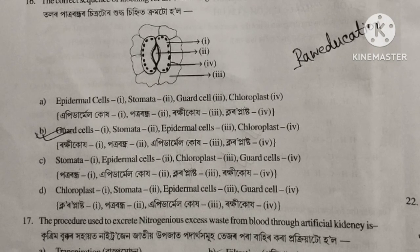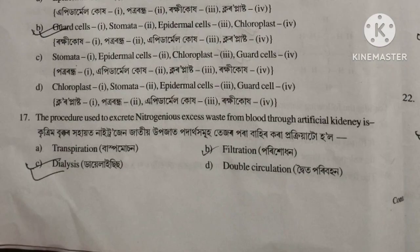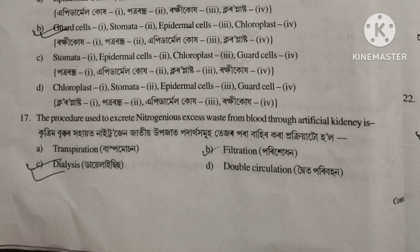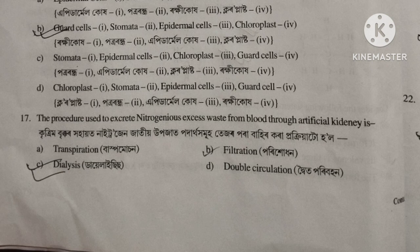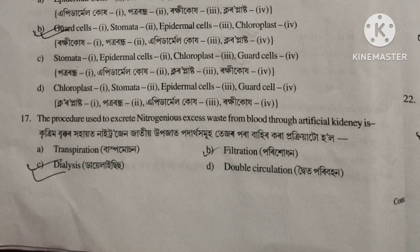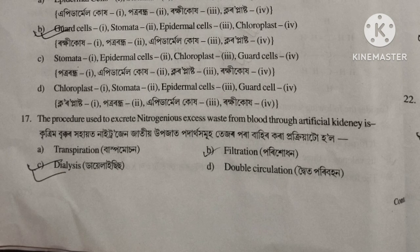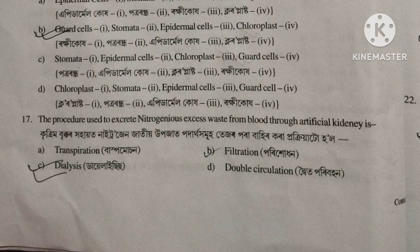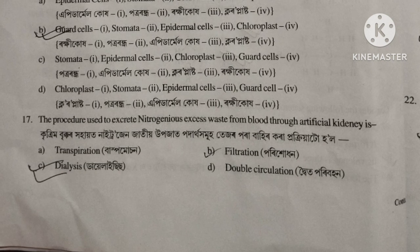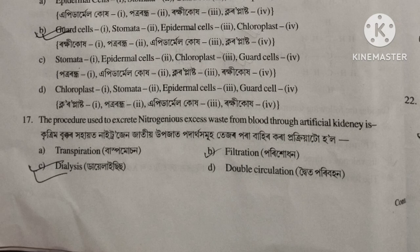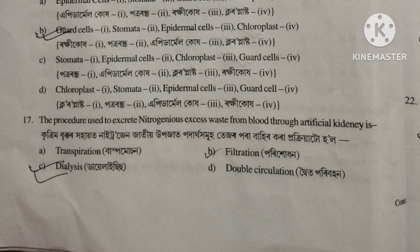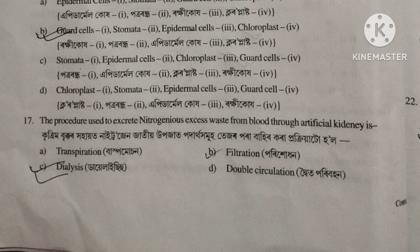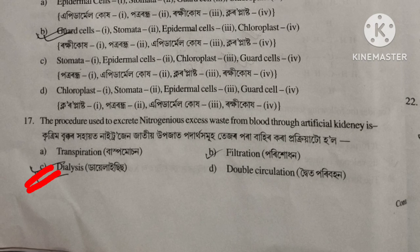Next, question 17. When nitrogen is the first product and it is carried outside through the process — option B involves baspa musan and dialysis. The correct answer is option C, dialysis.